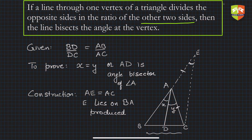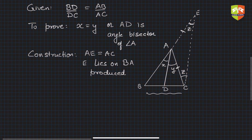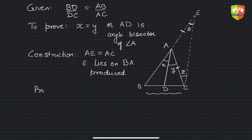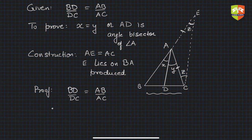Since AE equals AC, the triangle ACE is isosceles, so the opposite angles become equal. Let's say angle ACE equals angle AEC, both equal to z. Now, from the given condition, BD by DC is equal to AB upon AC.